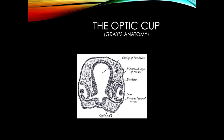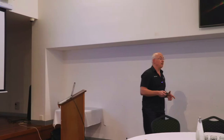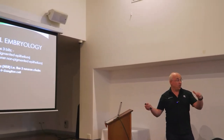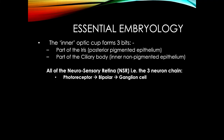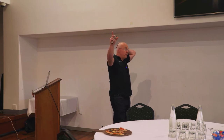The optic cup has a cranial part, a middle part, and a back third that go to form different structures in the eye. Those structures are related to whether it's the inner or outer aspect of the optic cup. The inner optic cup forms part of the iris — the posterior pigmented aspect — part of the ciliary body, and the neurosensory retina. There are only two bits you need to remember: the bulk of the retina comes from the inner aspect of the optic cup, and we call that the neurosensory retina.